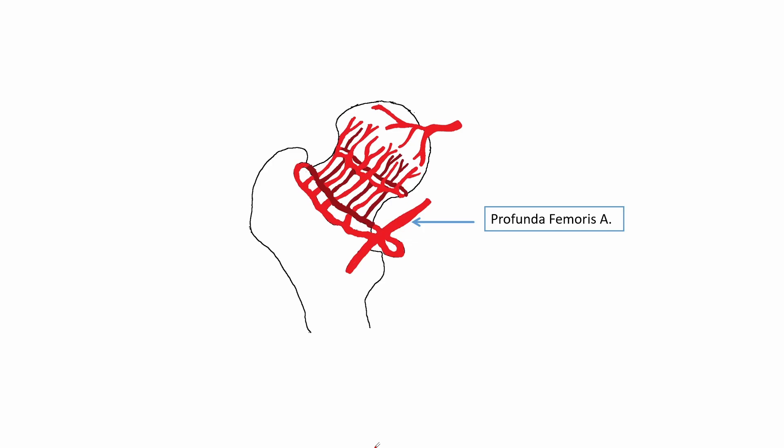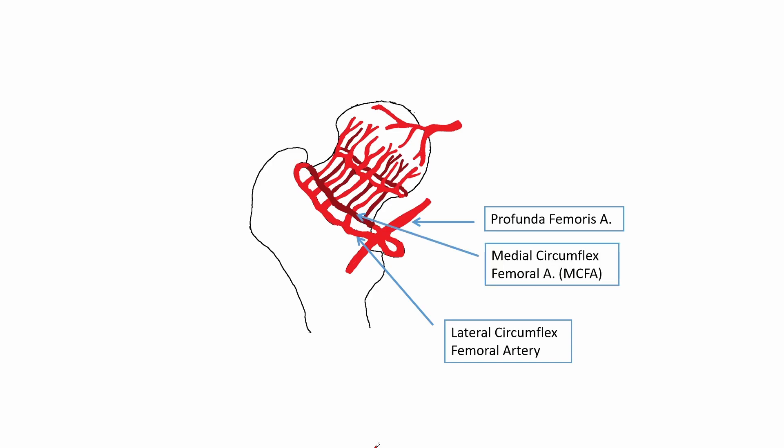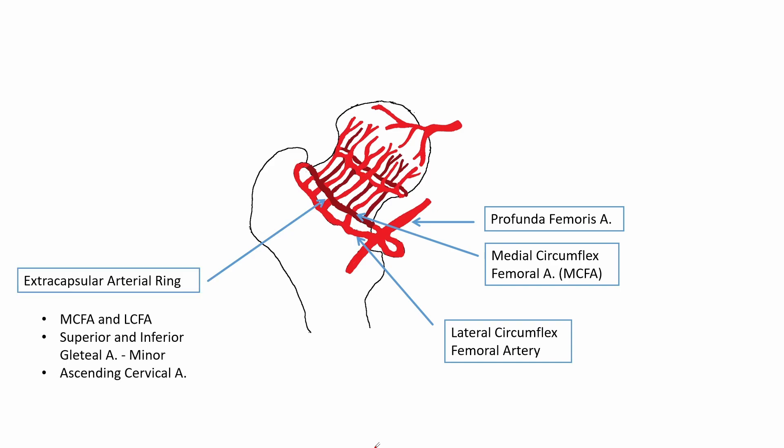The profunda femoris artery gives off the lateral circumflex femoral artery, which travels along the anterior surface of the base of the femoral neck, and the medial circumflex artery, which travels along the posterior surface of the base of the femoral neck. Together they form the extracapsular arterial ring, which also receives minor contributions from the superior and inferior gluteal arteries.